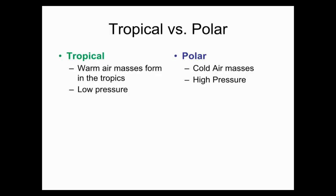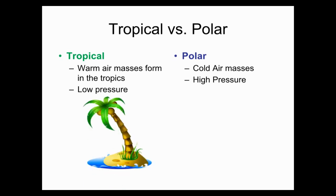We also have two air masses that decide on the temperature. Tropical air masses are warm air masses from the tropics that bring low pressure. Polar air masses are cold air masses that bring high pressure.